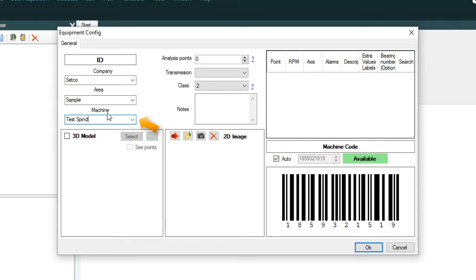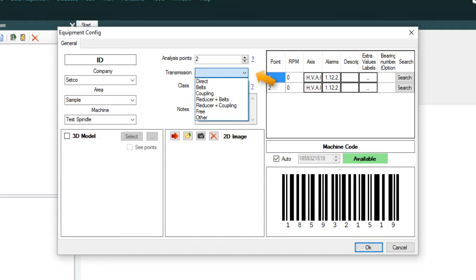Adding company and equipment names will help you organize the equipment in the database window. Select your number of analysis points. This will be 2 for this demonstration. Then, select a transmission type which identifies how the equipment is powered. This example is direct, the same as motorized.